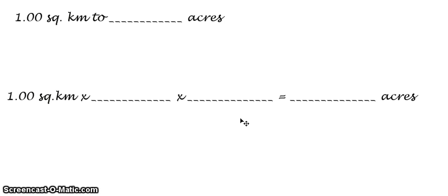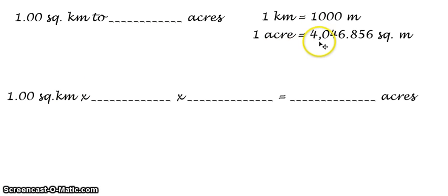And of course, before we can get our conversion factors, we must have or know our corresponding equivalent statements which are 1 kilometer is equal to 1,000 meters and the other one is 1 acre is equal to 4,046.856 square meters.